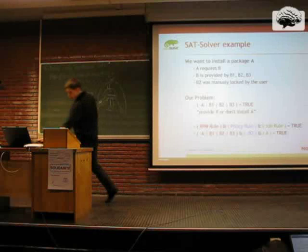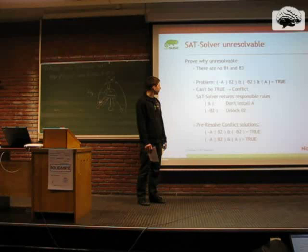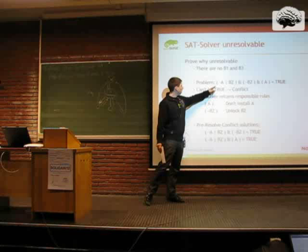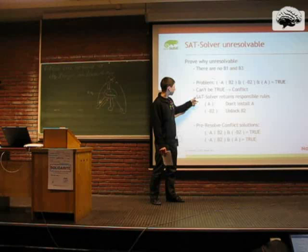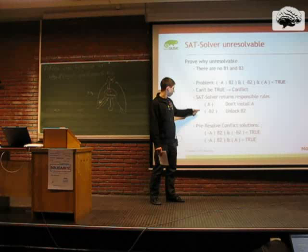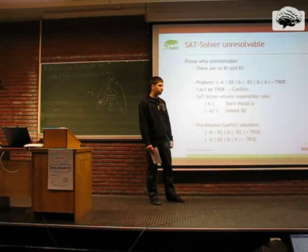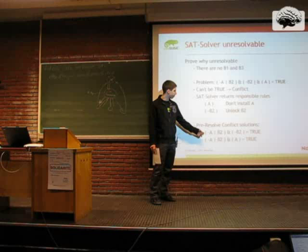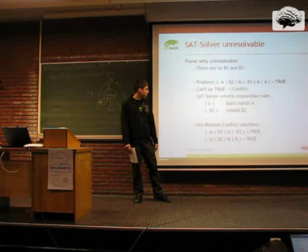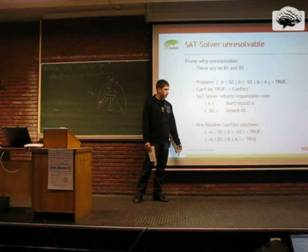When we have an unresolvable problem — when there is no B1 or B3 — the SAT solver detects the conflict. We have the mathematical proof that it is unresolvable, and the SAT solver returns the relevant rules. Before solutions are returned to the user, they are also pre-resolved: the SAT solver checks if removal of the rules fixes the problem. You get all the changes upfront and aren't asked 20 times for just one more package.